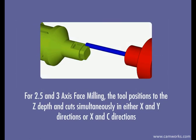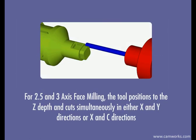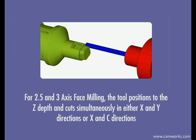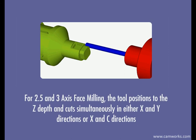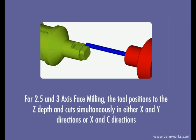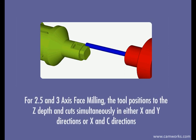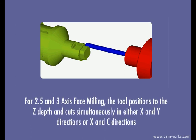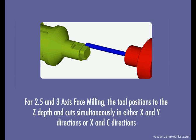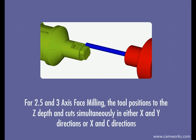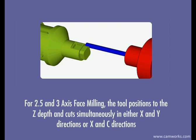For 2.5-axis space milling, the tool positions to the Z depth and cuts simultaneously in either X and Y directions or X and C directions.